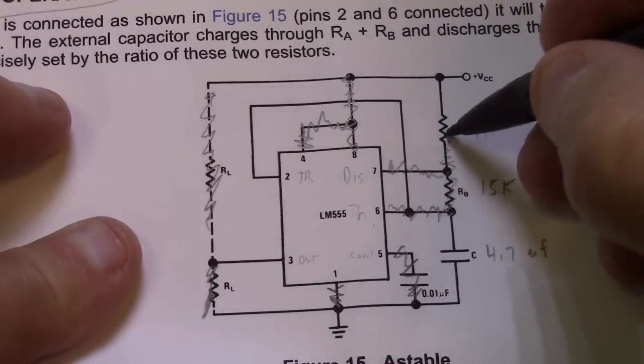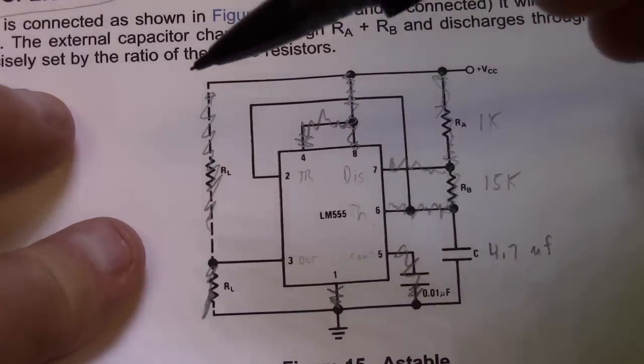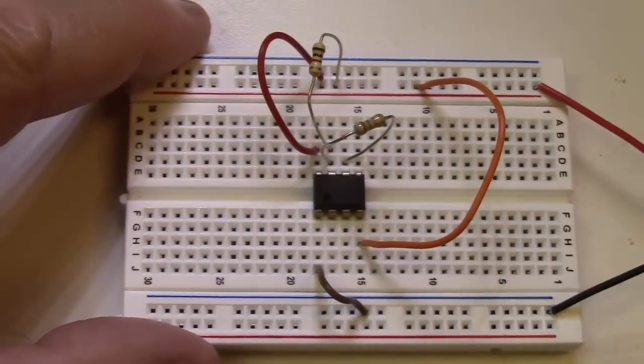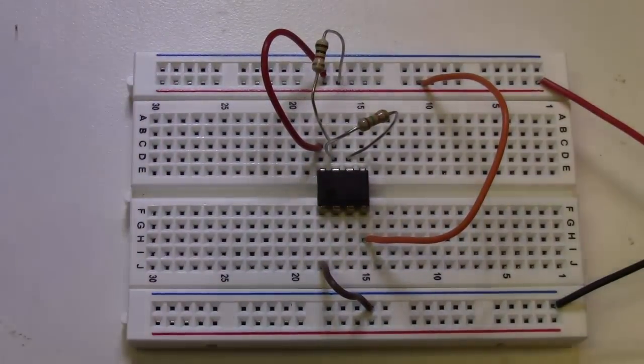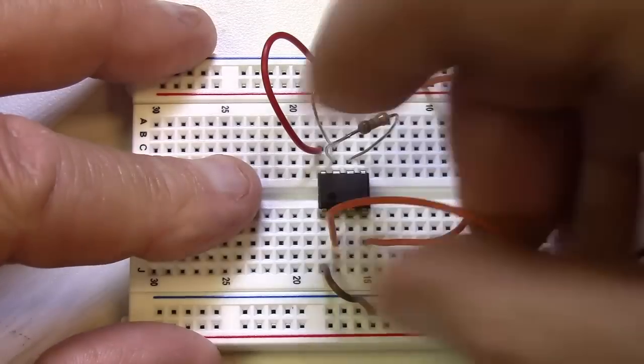Now we need to hook pin two to pin six. Pin two is our trigger and pin six is our threshold. Let's go back over here and we're going to hook pin two to six.